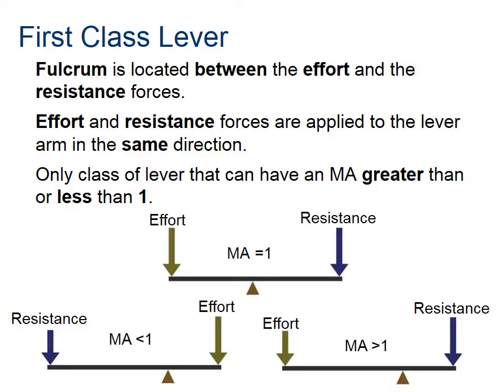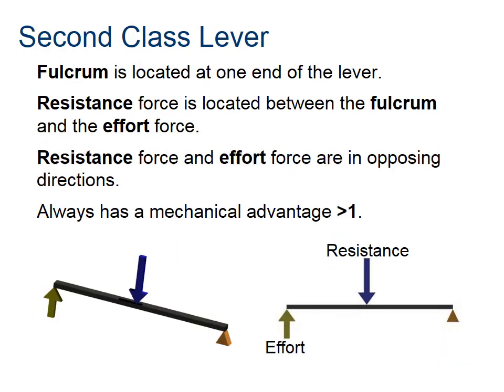In the lower left example, the effort force is larger than the resistance force, and the fulcrum is moved closer to the effort — that's why a larger effort force is needed to keep it in equilibrium. In this case the mechanical advantage is less than one. In the lower right, the fulcrum is moved closer to the resistance force, and the mechanical advantage turns out to be greater than one.